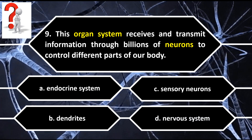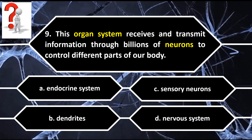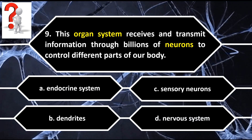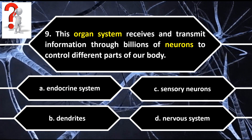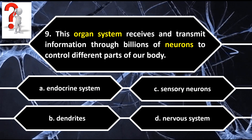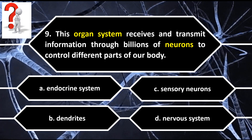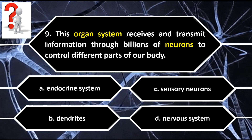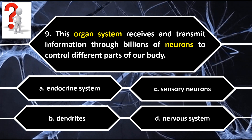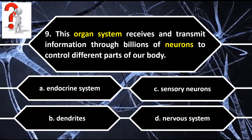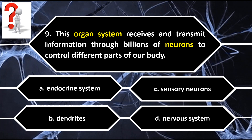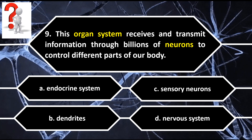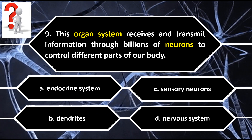Number 9. This organ system receives and transmits information through billions of neurons to control different parts of our body. A. Endocrine system. B. Dendrites. C. Sensory neurons. D. Nervous system.